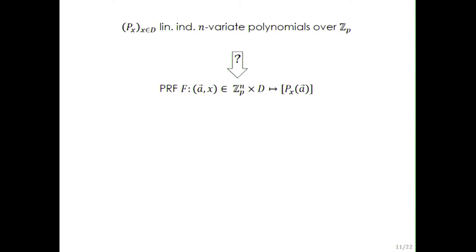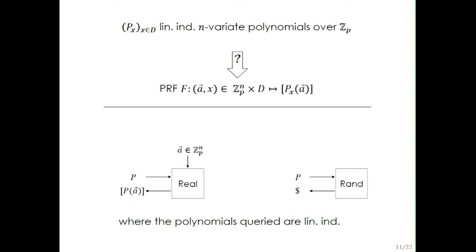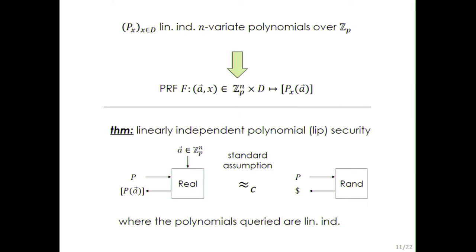The more surprising direction is that linear independence is actually a sufficient condition to obtain a pseudorandom function under standard assumptions. To prove this, we introduce a new security notion called LIP security, which stands for Linearly Independent Polynomial security. In both worlds, the adversary queries an oracle with linearly independent multivariate polynomials. In the real world, they get the group element whose discrete logarithm is the evaluation of the polynomial at A; in the random world, they get random group elements. We prove these two worlds are computationally indistinguishable under standard assumptions.